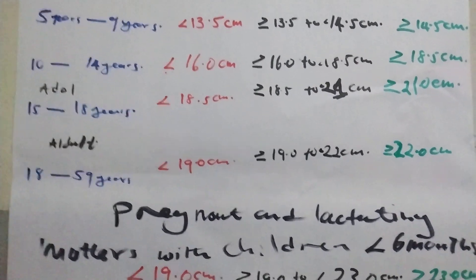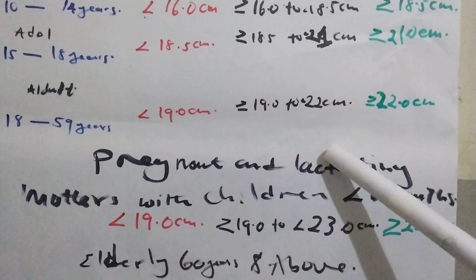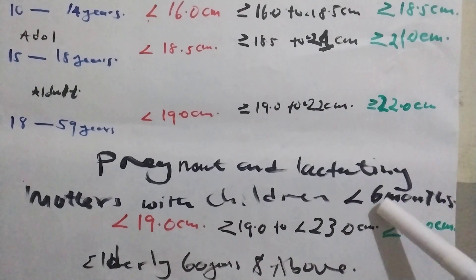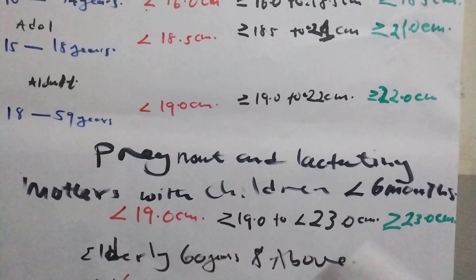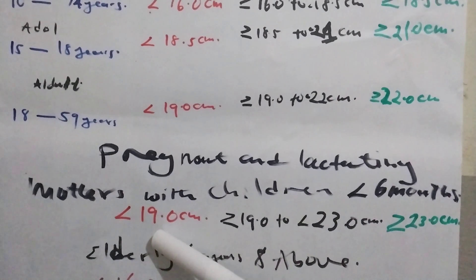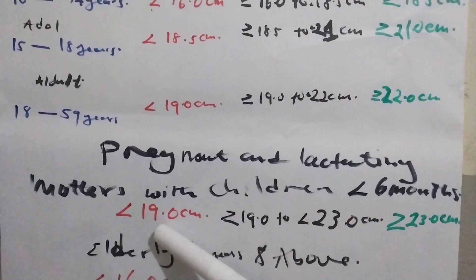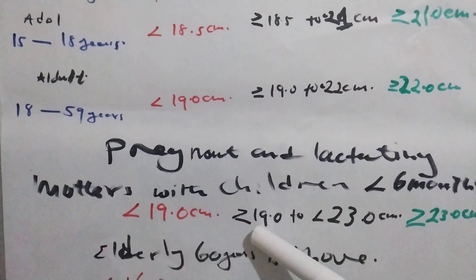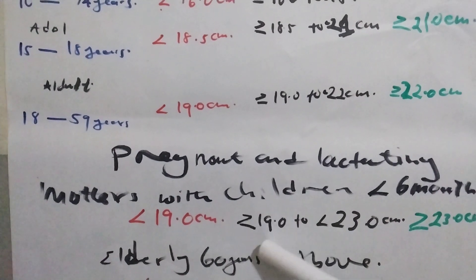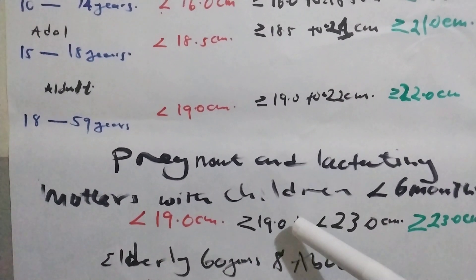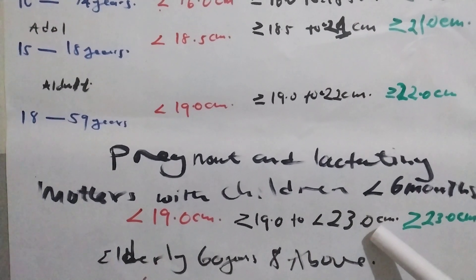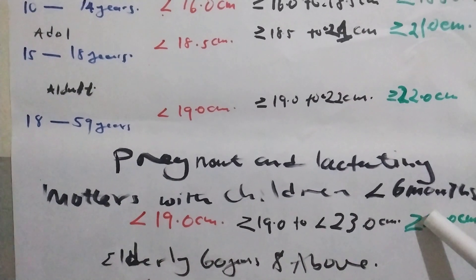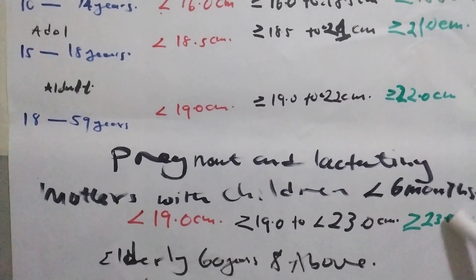For pregnant and lactating mothers with children less than 6 months: severe acute malnutrition is less than 19.0 centimeters. Moderate acute malnutrition is 19.0 centimeters to 23.0 centimeters. Normal is 23.0 centimeters and above.